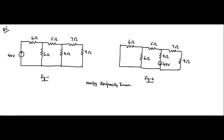Hello friends, welcome to Engineering Tutorial. We'll continue our discussion related to reciprocity theorem — this is the fifth question we'll be discussing. We have two circuits, and the difference between them is the location of the voltage source. We have a 40 volt voltage source in the first branch of the first circuit, and in the third branch of the second circuit.